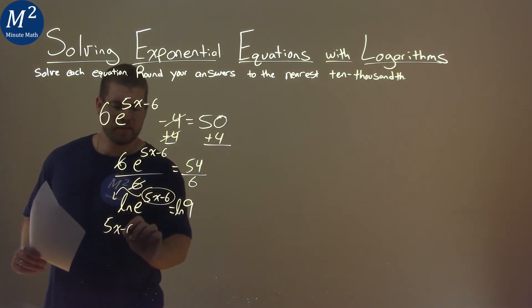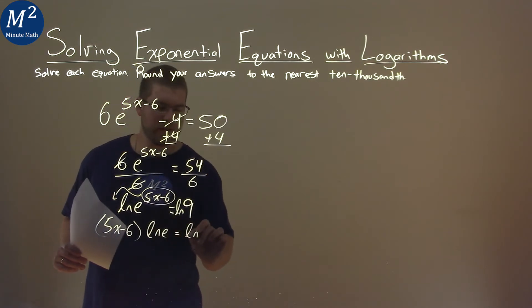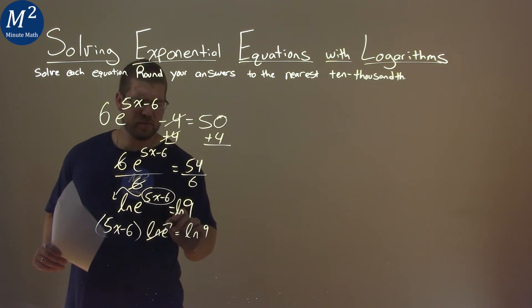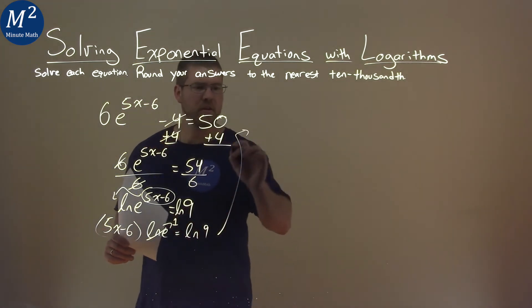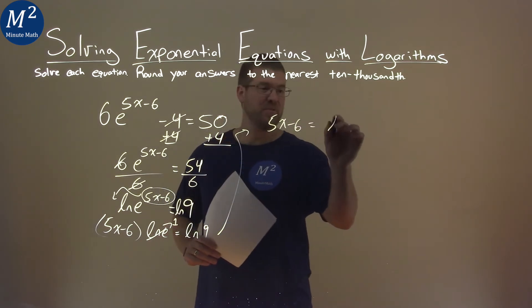We now have 5x minus 6 times the natural log of e, which equals natural log of 9. Well, natural log of e is just equal to 1. So I can rewrite this as 5x minus 6 equals natural log of 9.